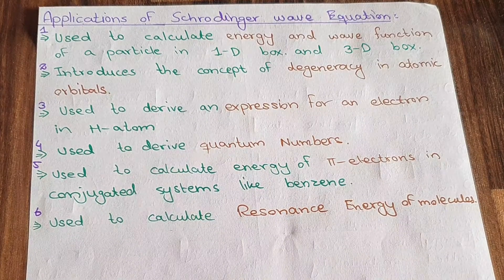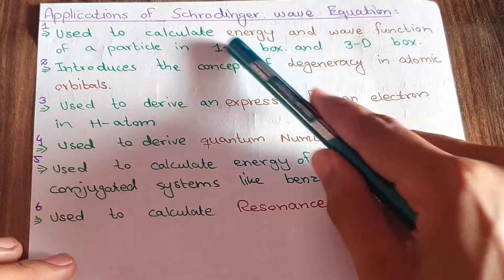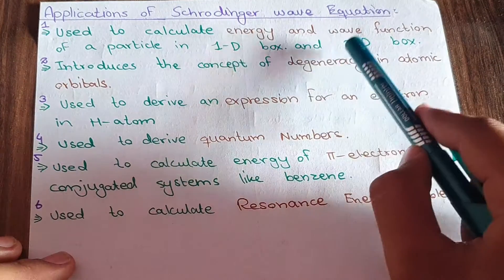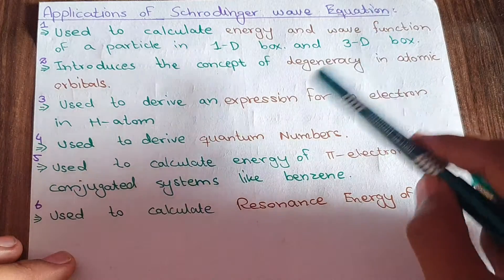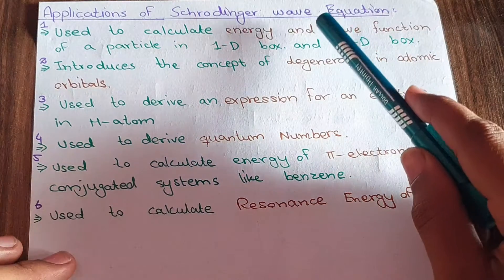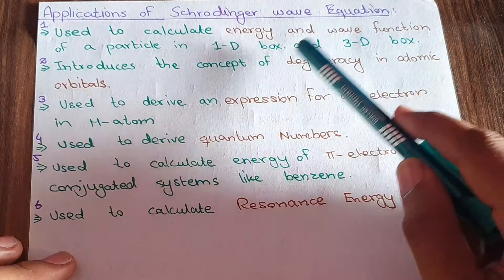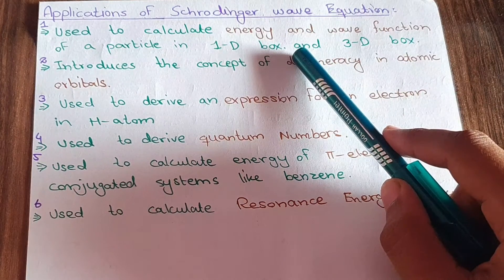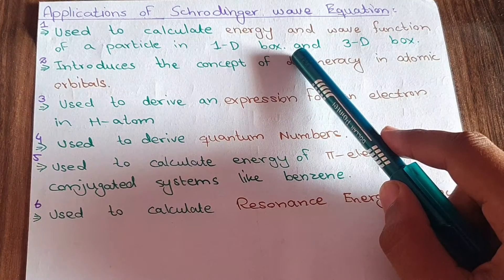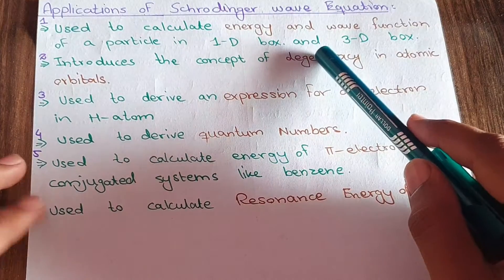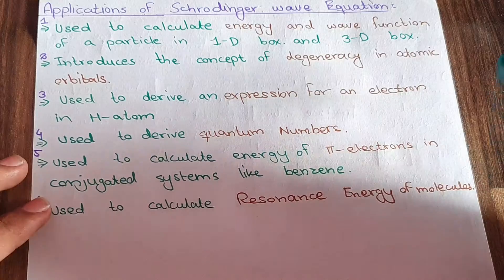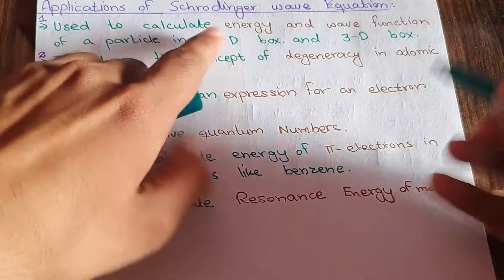Point number one: the Schrödinger wave equation is used to calculate the energy and the wave function of a particle in a 1D box and a particle in a 3D box. So I can apply the Schrödinger wave equation to find the energy and wave function of a particle confined in a one-dimensional box and also in a three-dimensional box.